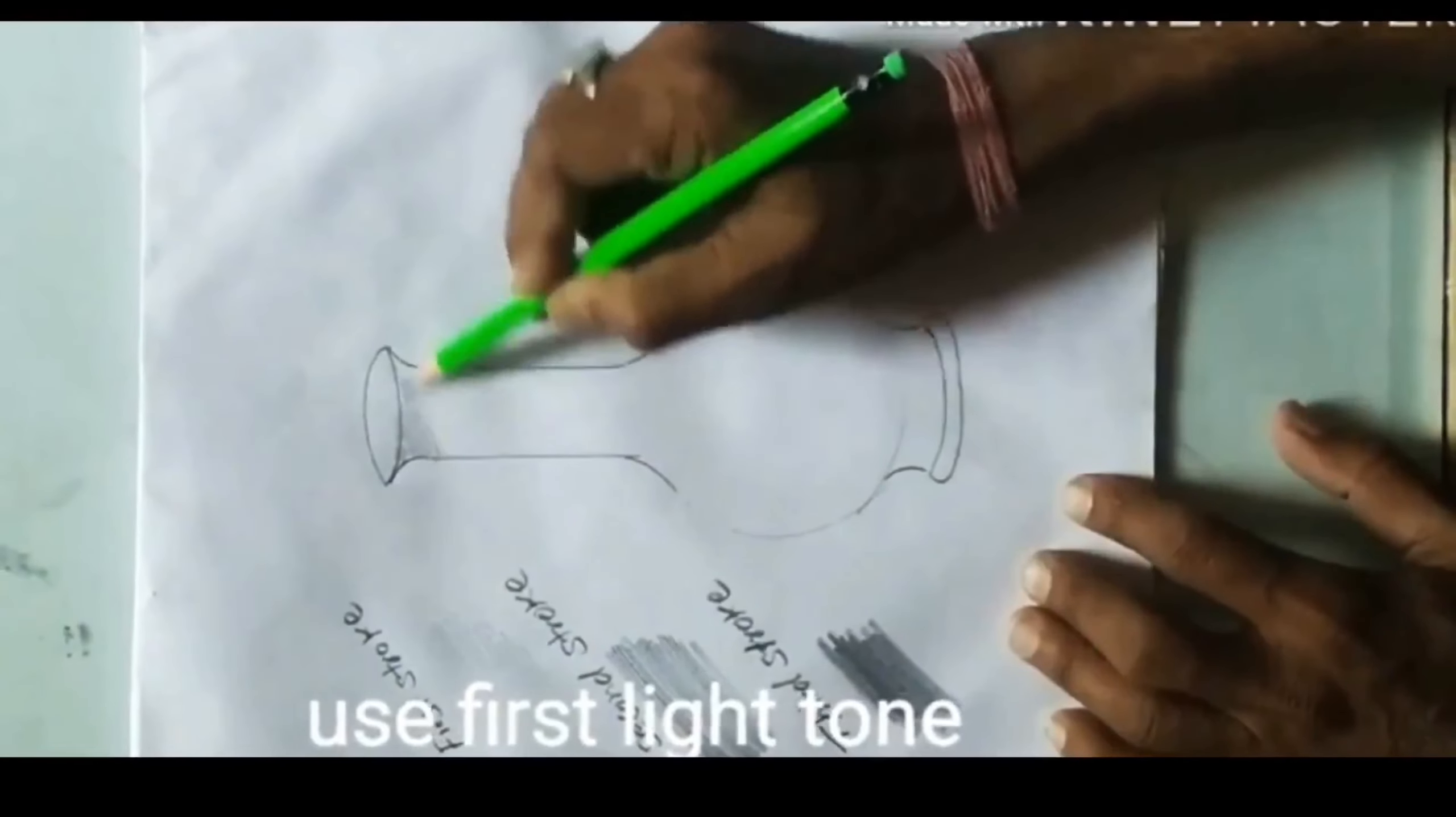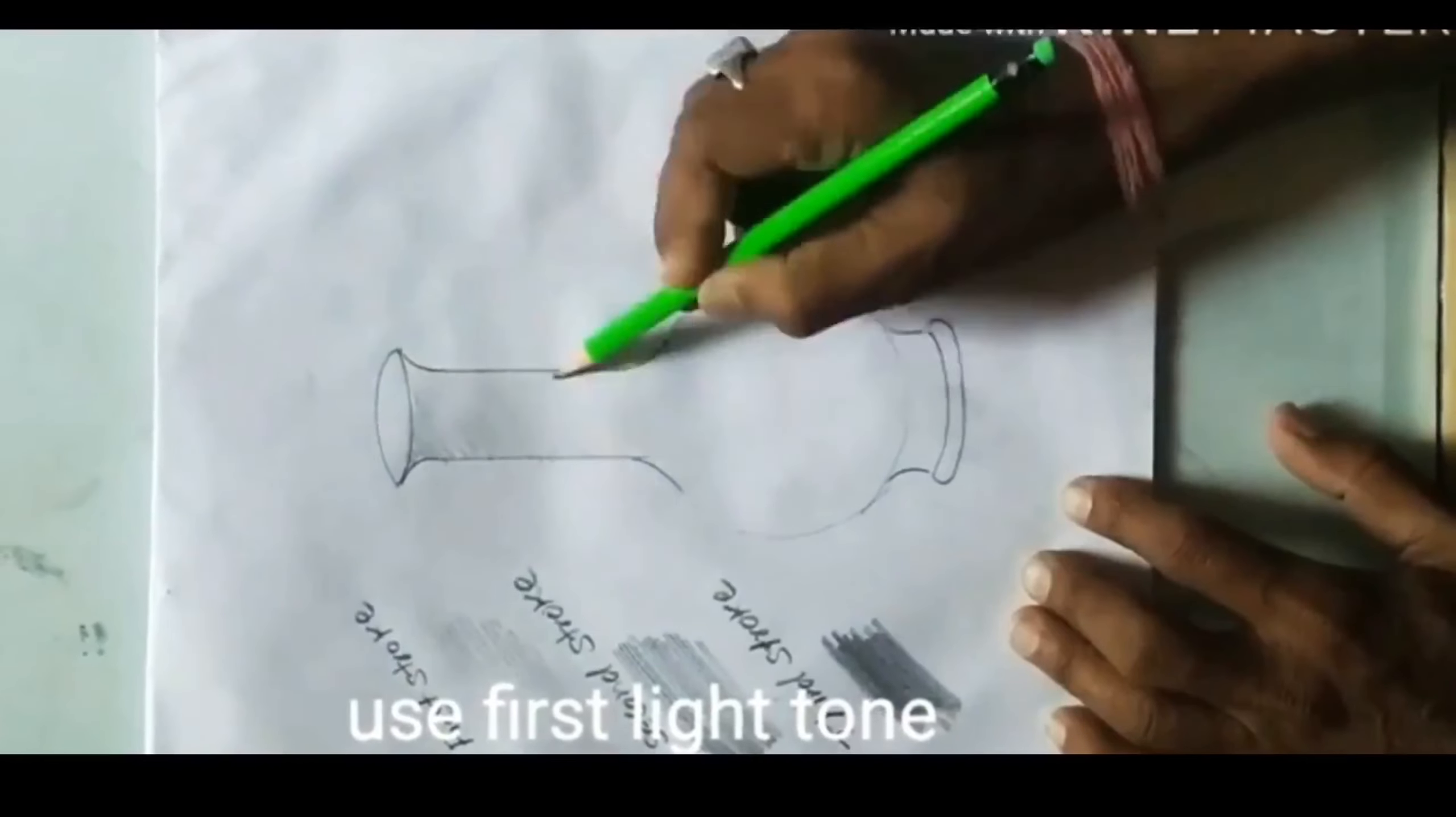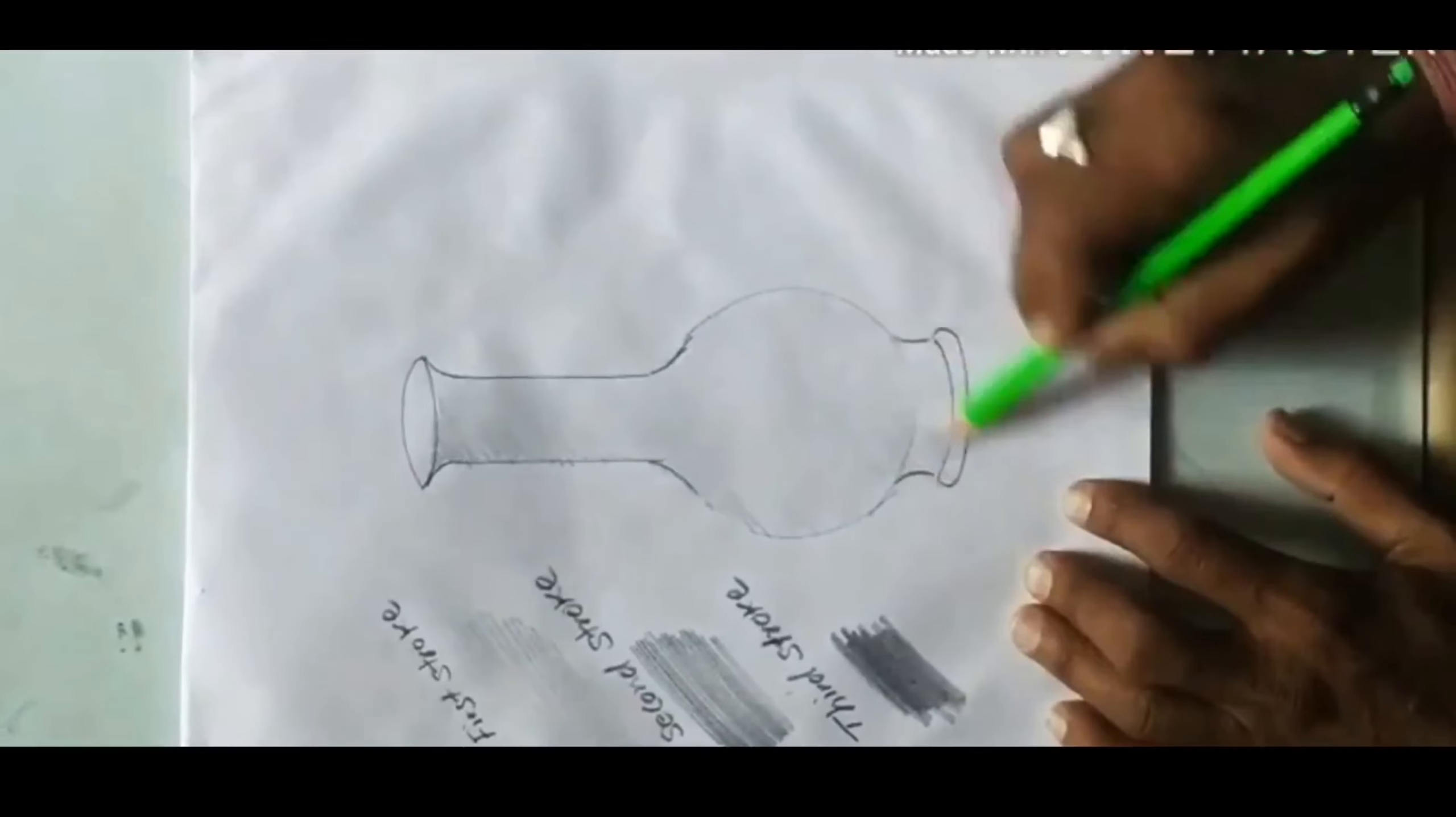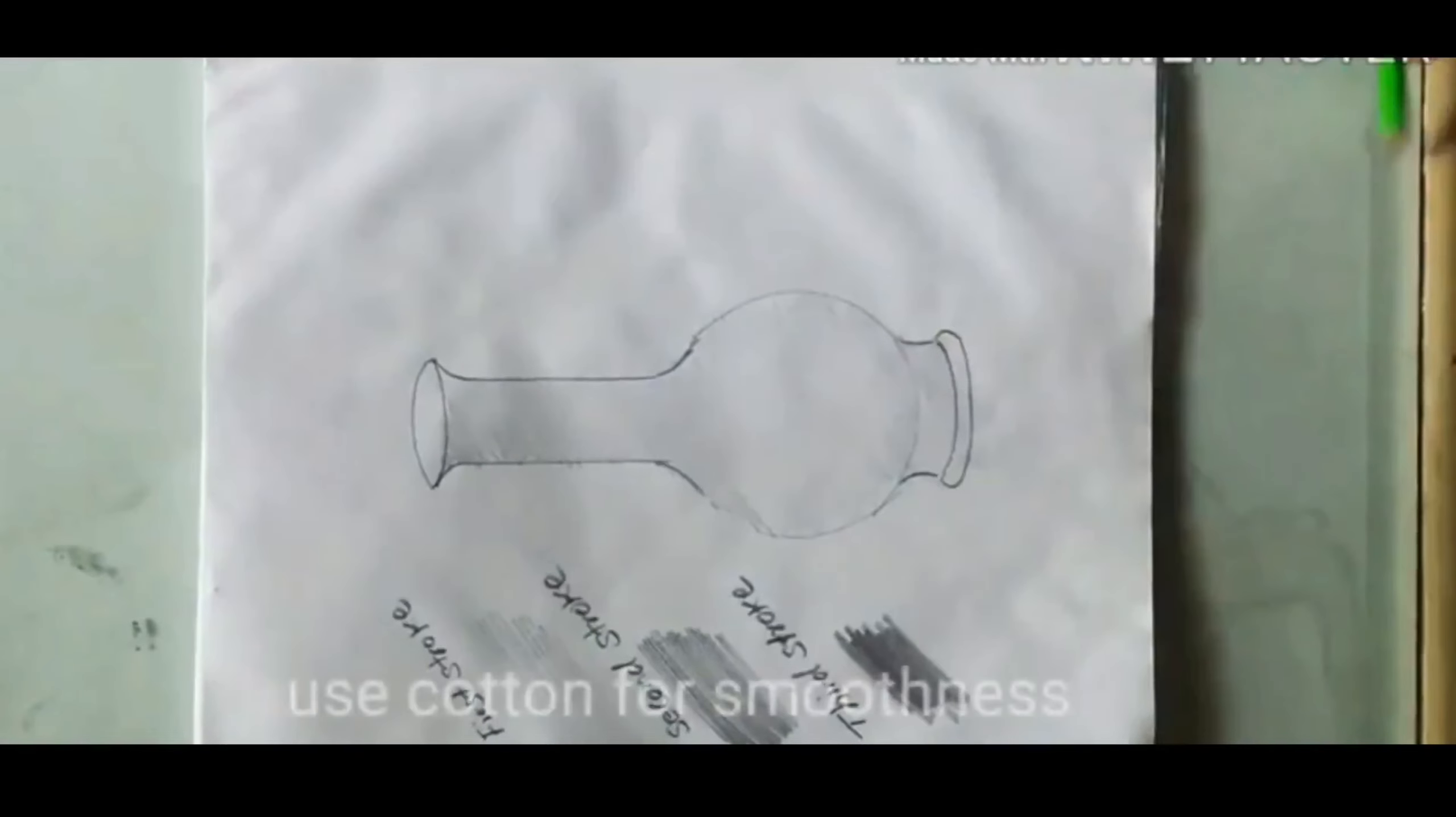Rule of shading: First we have to use light shade. Use cotton for smoothness.